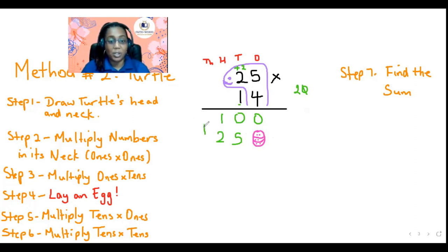So we put our addition symbol. We put our total line. And let's add. Let's see if we will get back 350 like we did in the traditional method. So 0 plus 0 is 0, 0 plus 5 is 5, 2 plus 1 is 3. Hey, look at that, 350. So we can do this method. Let's go to the last and final method, the distributive property method.